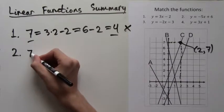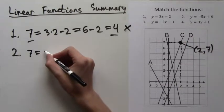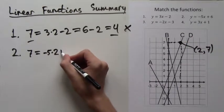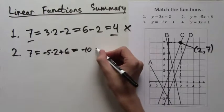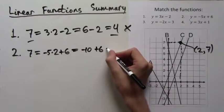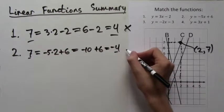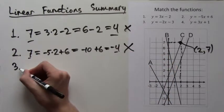So we move on to formula number 2. We plug in y equals 7 and x equals 2. We get negative 5 times 2 plus 6, which is equal to negative 10 plus 6, which is equal to negative 4, still not equal to 7. So we keep looking.